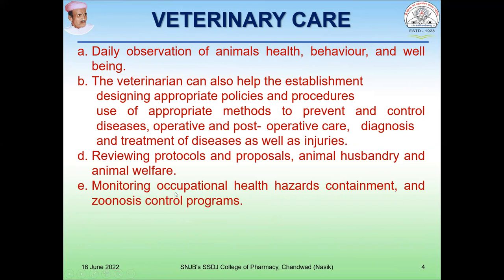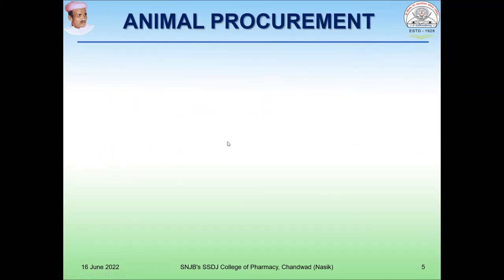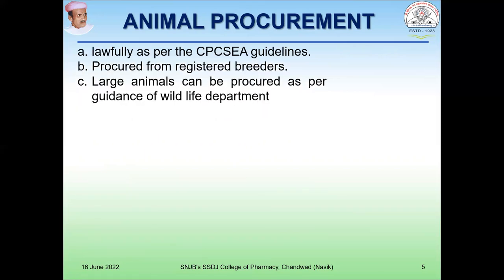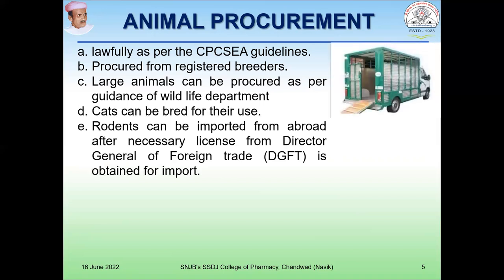The veterinarian also helps in monitoring occupational health hazards, containment, and zoonosis control program, and can also supervise animal nutrition and sanitization. Regarding animal procurement, which is an important part of animal research, one must procure the animal from a registered breeder. All animals should be procured lawfully as suggested by the CPCSEA guideline, from registered breeders having CPCSEA registration and breeding license. Large animals can be procured as per the guidelines of the wildlife department, and cats can be bred for their use.